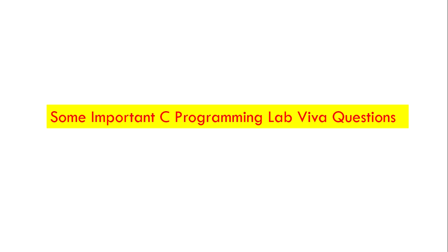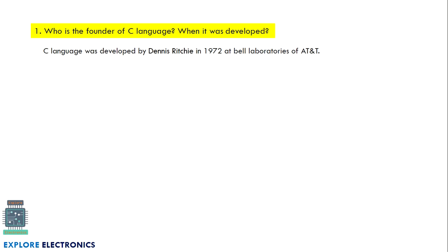Hello everyone, welcome to this video. In this video, let us see some important C programming lab viva questions which are repeatedly asked by the examiners in the lab. The first one: who is the founder of C language and when was it developed? C language was developed in 1972. Dennis Ritchie is the founder, and he developed it at Bell Laboratories of AT&T.